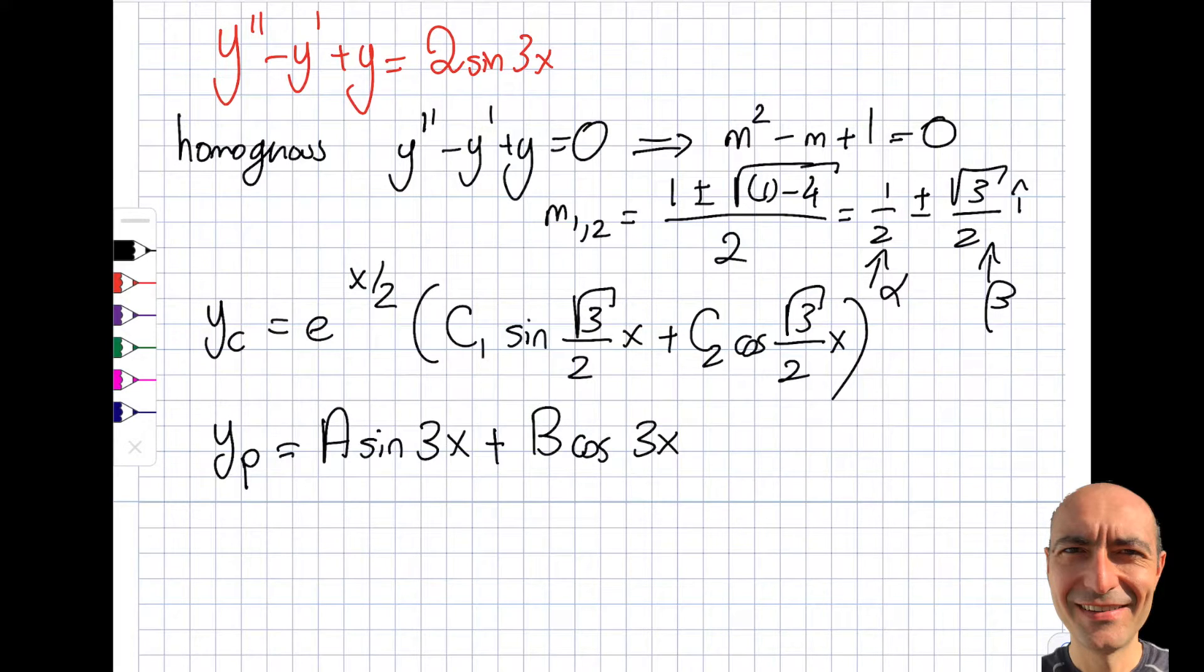I will do the same thing as I did before. I will take the derivative of that. So that's going to be 3a cosine of 3x minus, because derivative of a cosine is a negative sine, 3b sine 3x.